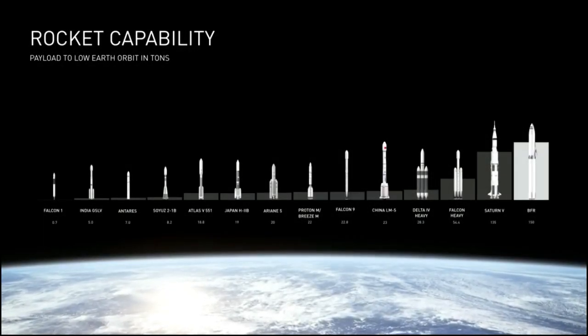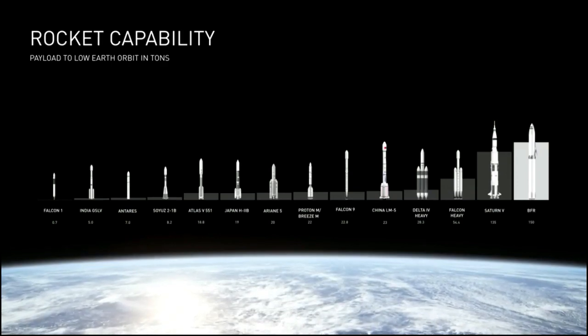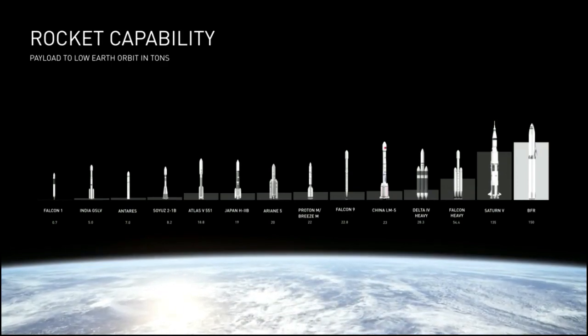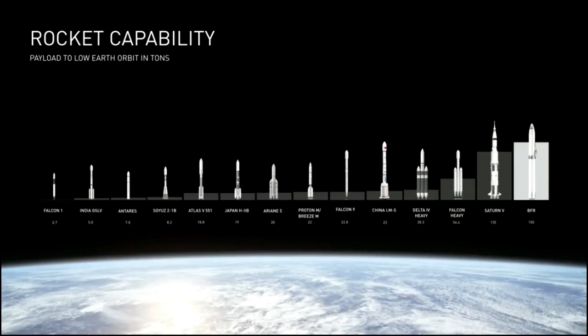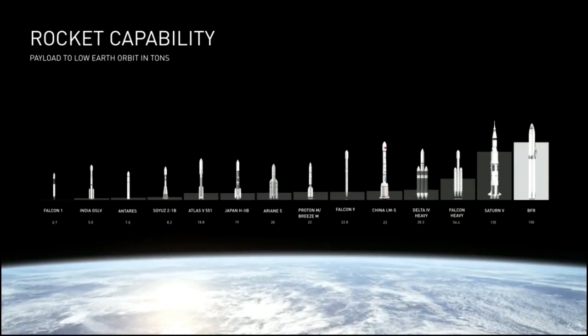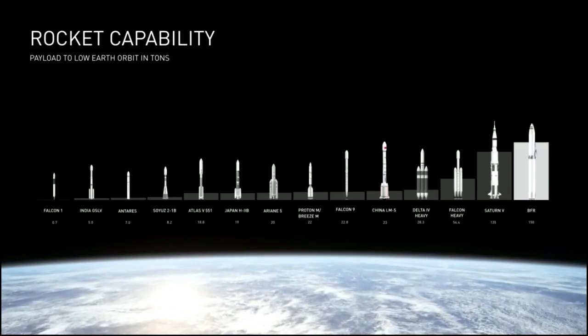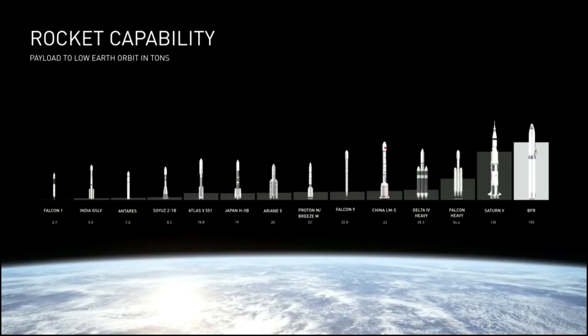This gives you a rough sense of rocket capability, starting off at the low end with the Falcon 1 at a half-ton and then going up to BFR at 150. It's important to note that BFR has more capability than Saturn V, even with full reusability.